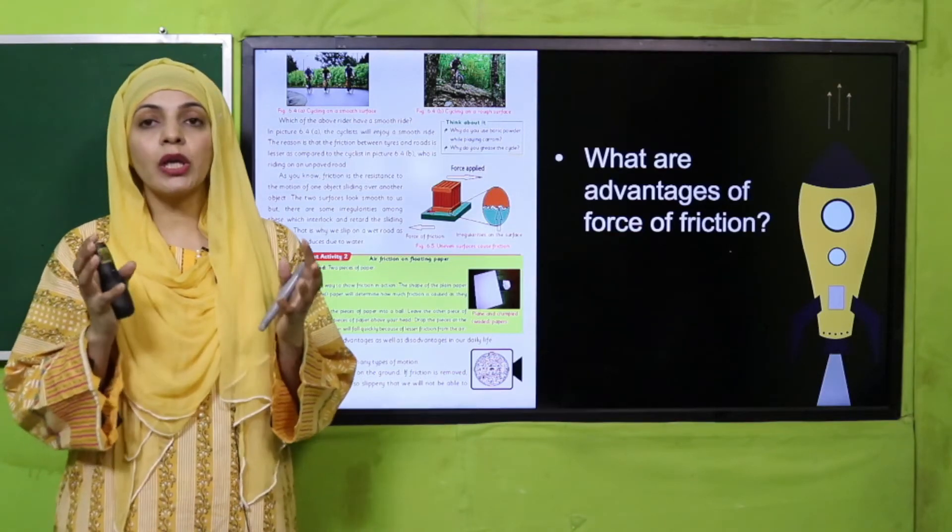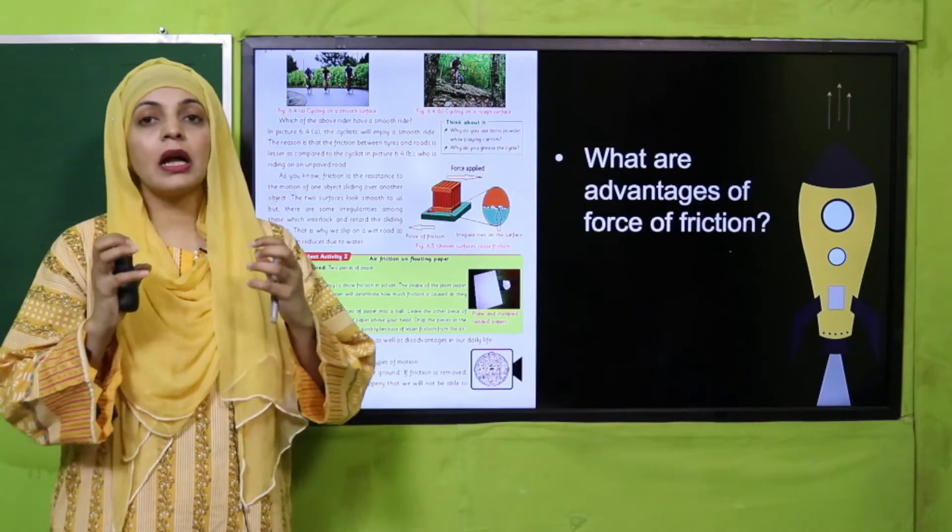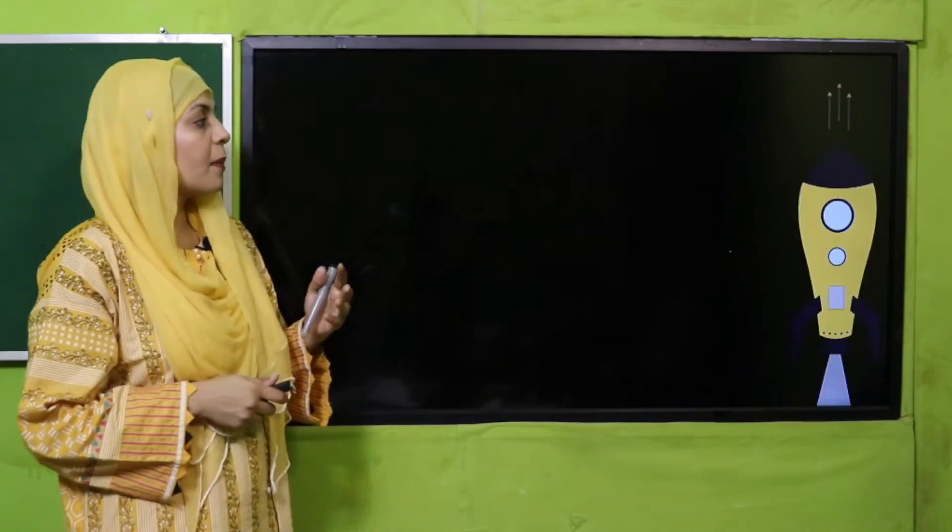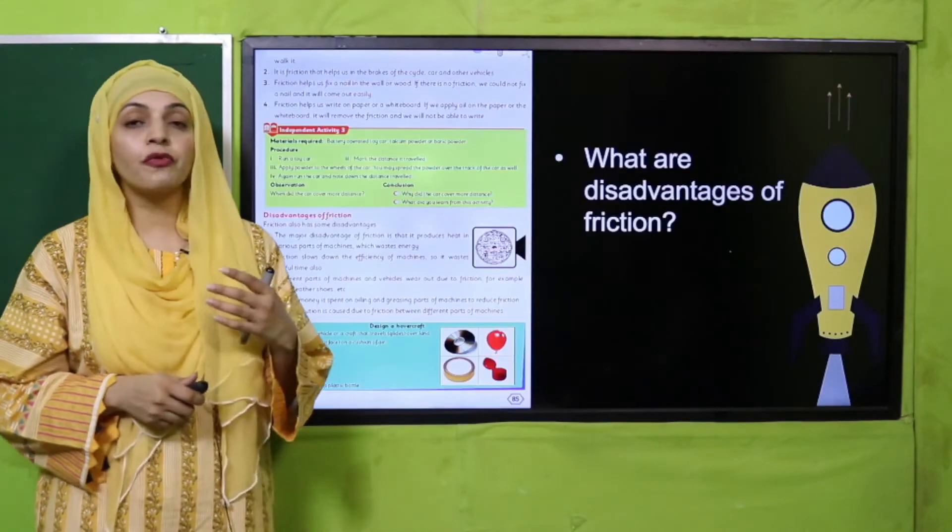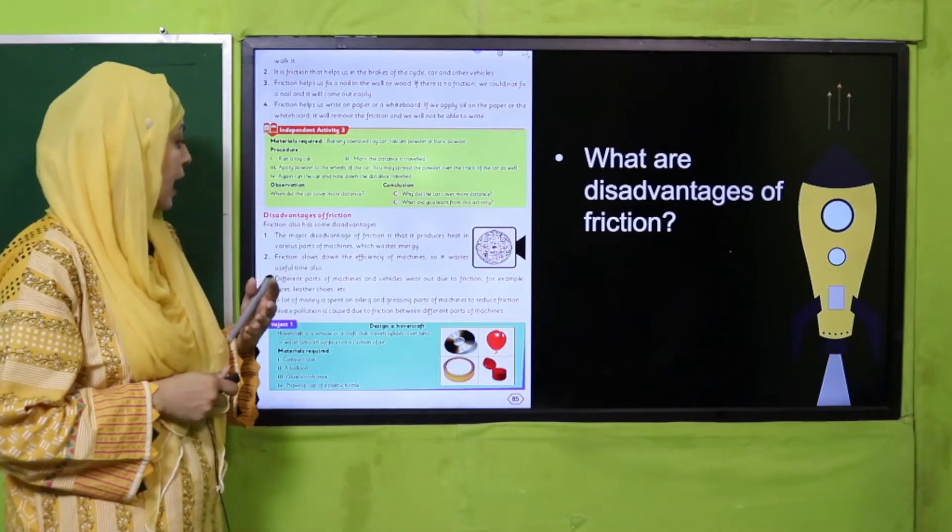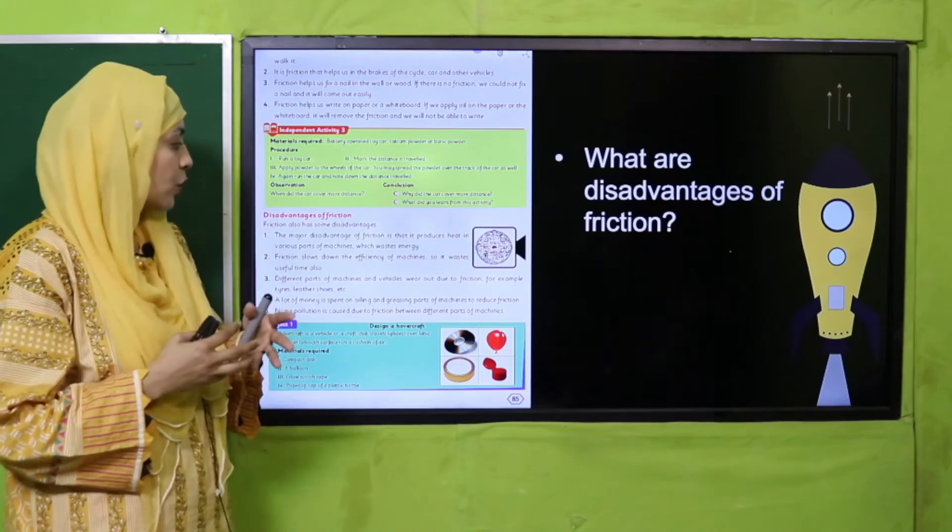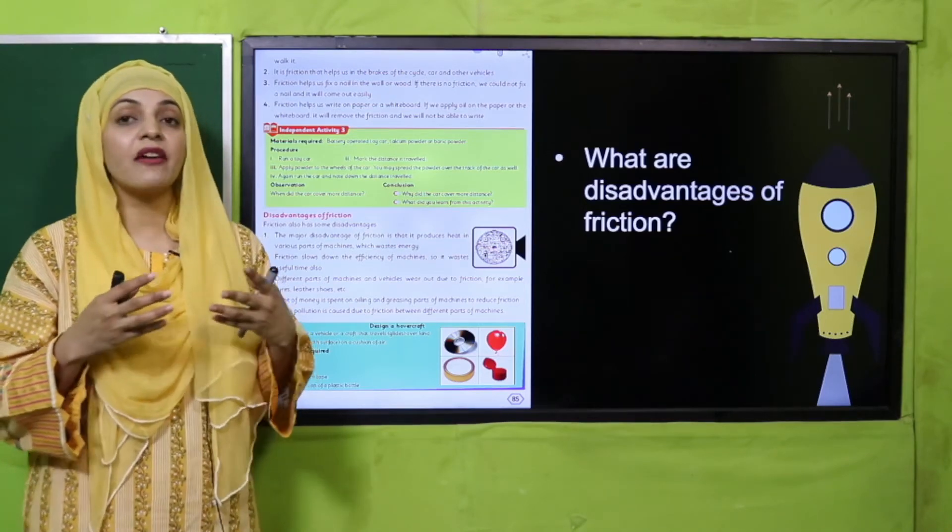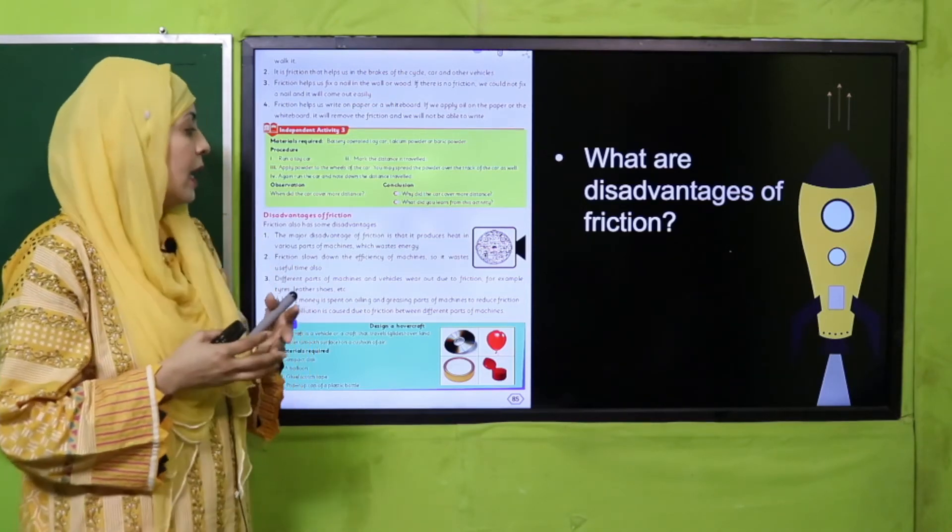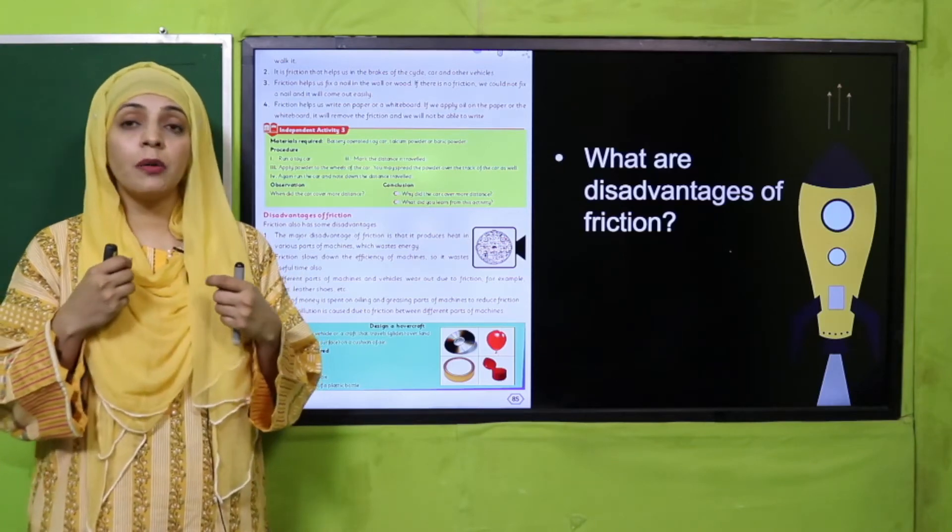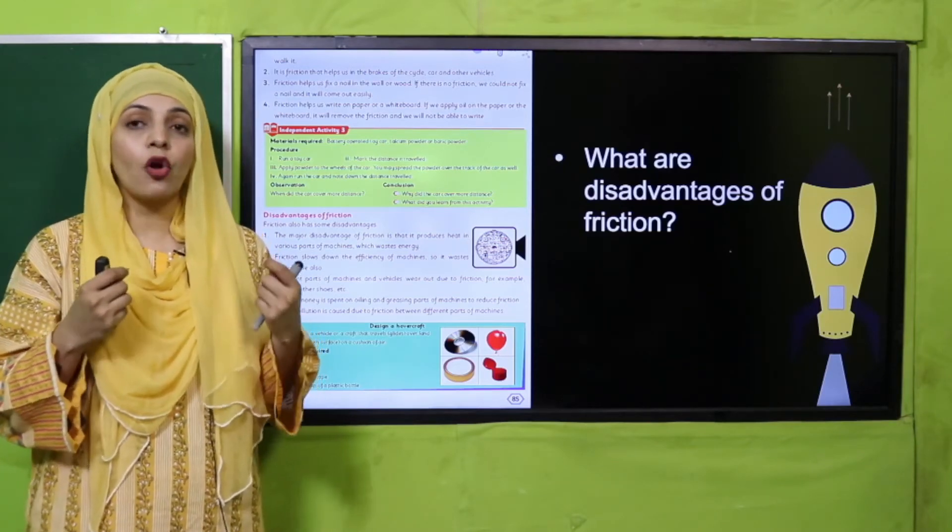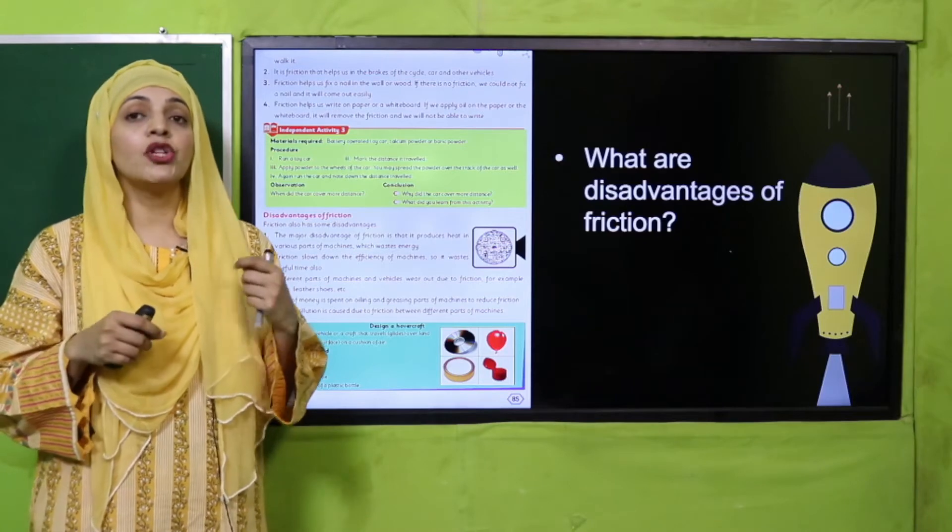Then we discussed the disadvantages of friction. Disadvantages of friction include that it produces heat when two surfaces are in contact. Besides this, it reduces the efficiency of machines. Different parts of electronics or machines get worn out quickly because of friction.